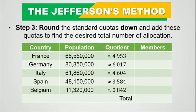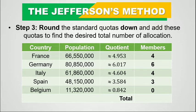Step 3: let's round the standard quotas down and add these quotas to find the total number of allocations. France: 4, Germany: 6, Italy: 4, Spain: 3, Belgium: 0. We consider only the whole number and disregard the fractional part. The total of these members is 17.